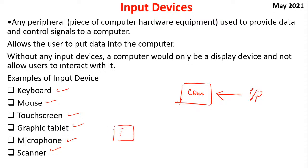Scanner is used whenever there is a photo or any document and you want to make a digital copy of it. For example, you have your PAN card. You go to the local internet cafe, and if there is a scanner, you say scan this document. So you are making a digital copy of this PAN card — that is a scanner.